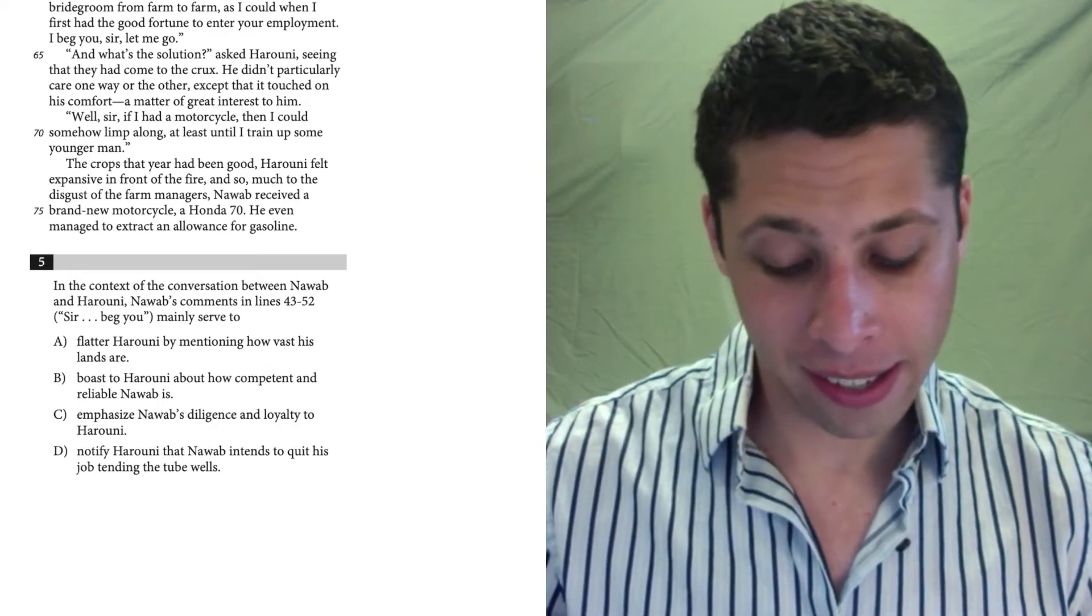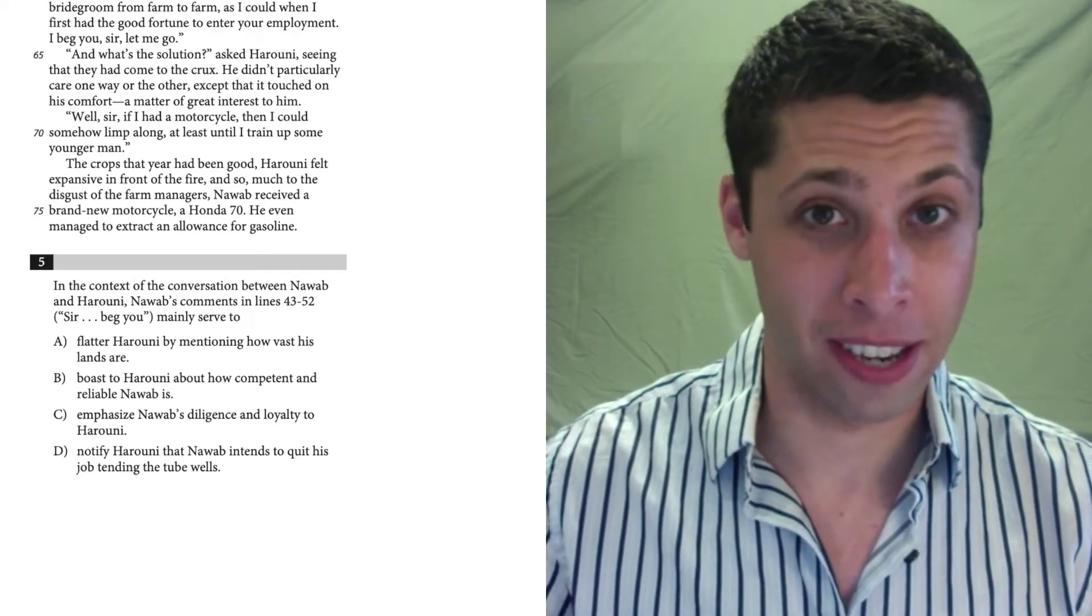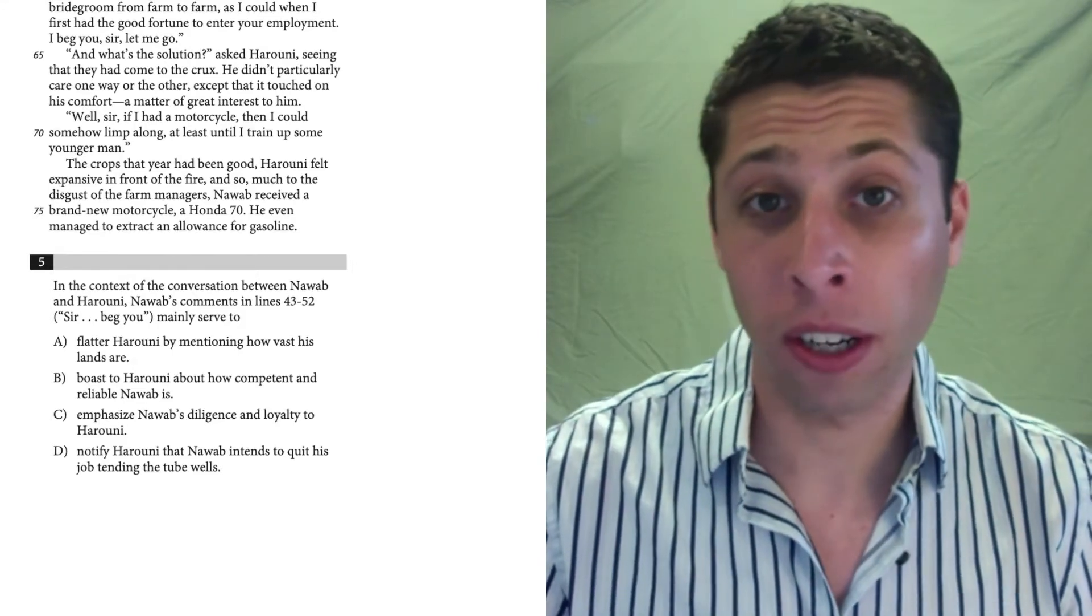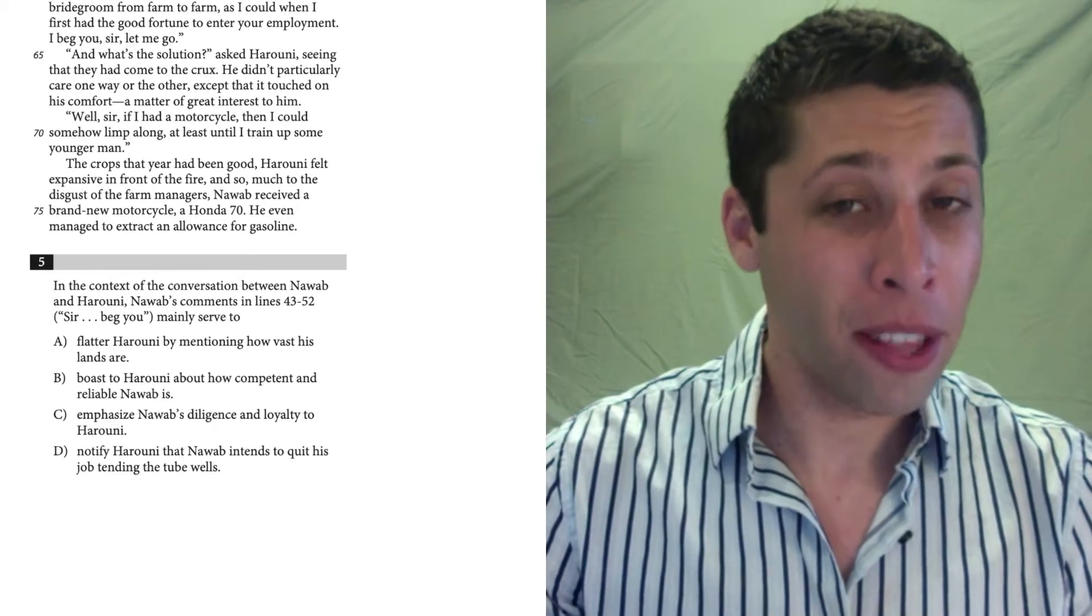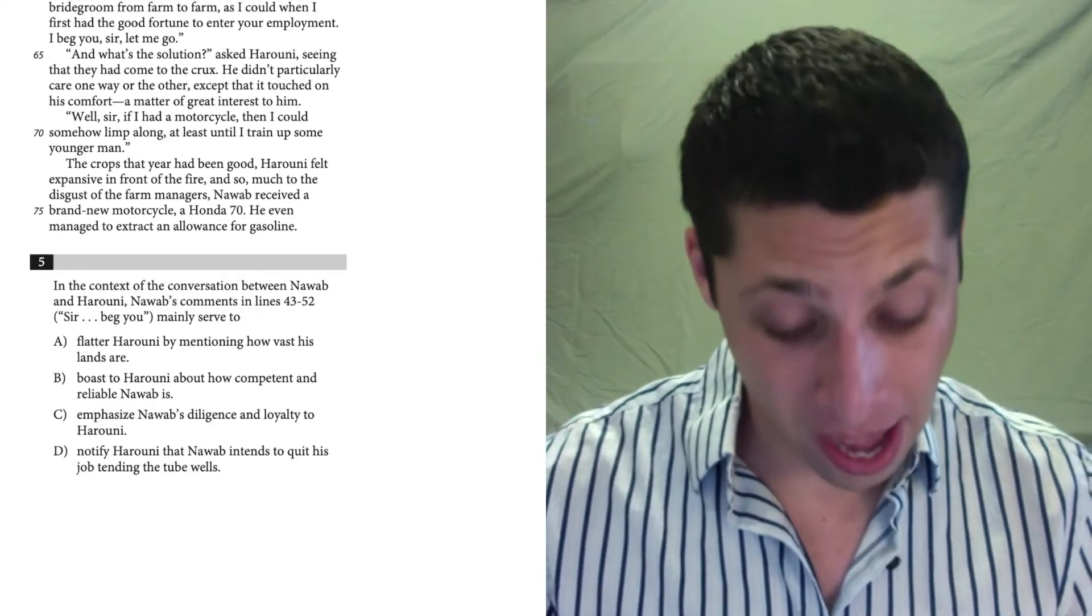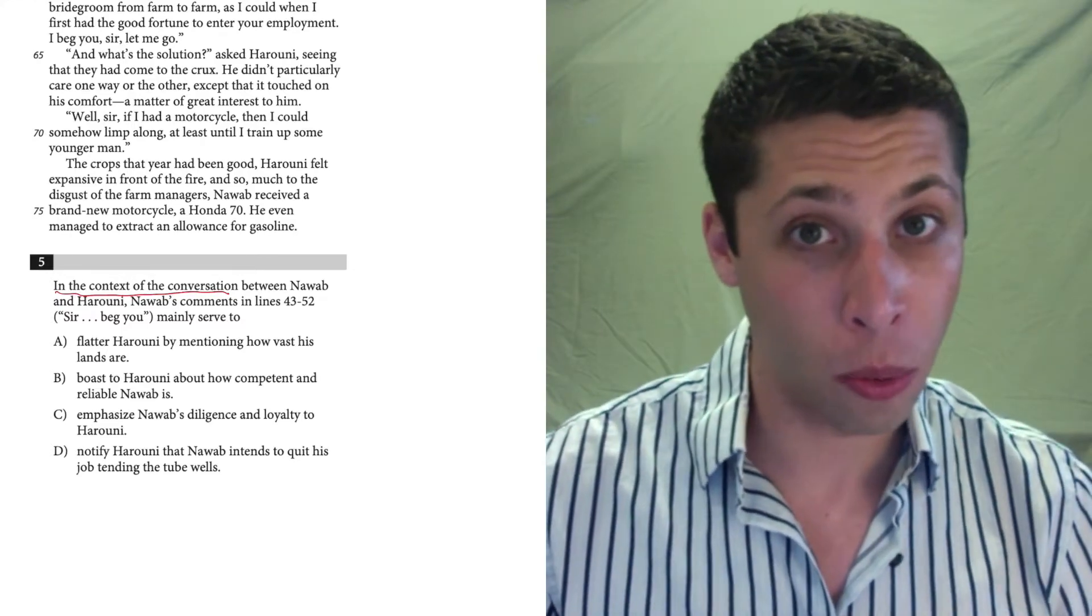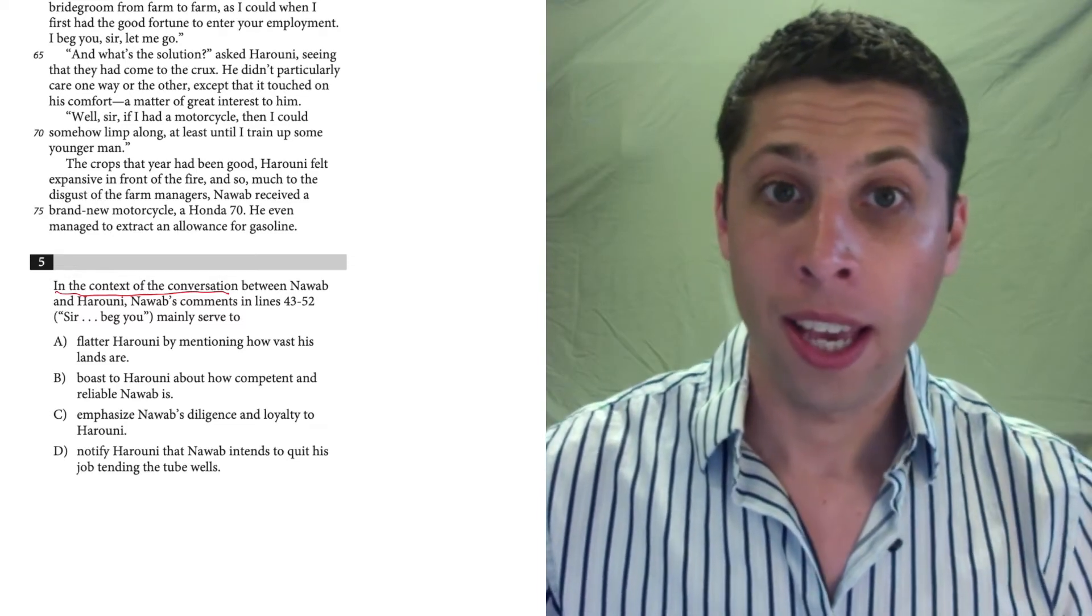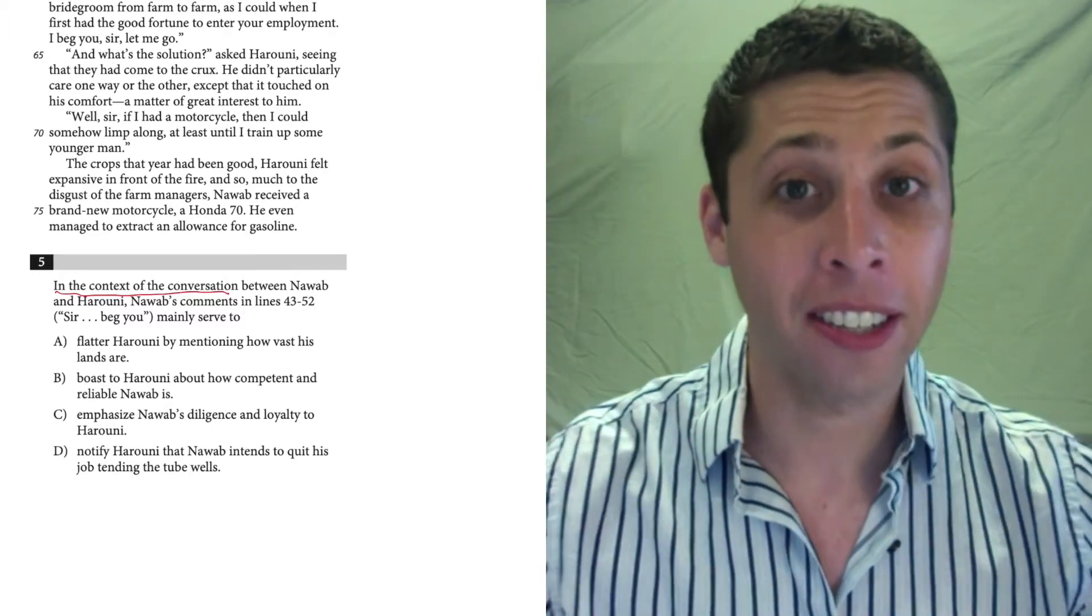So if we look at it, it says to go to lines 43 to 52. Now we've learned from other questions in this test that we need to follow the plus one sentence rule, which means we need to read a sentence before and after these line references just to play it safe. However, that's even more important on this question because of the instructions in the question itself. It says, in the context of the conversation between Nawab and Haruni, Nawab's comments in 43 to 52 mainly serve to. So yeah, they're telling us to go to 43 to 52, but they're also saying look beyond that. In the context of the conversation, what are they saying?